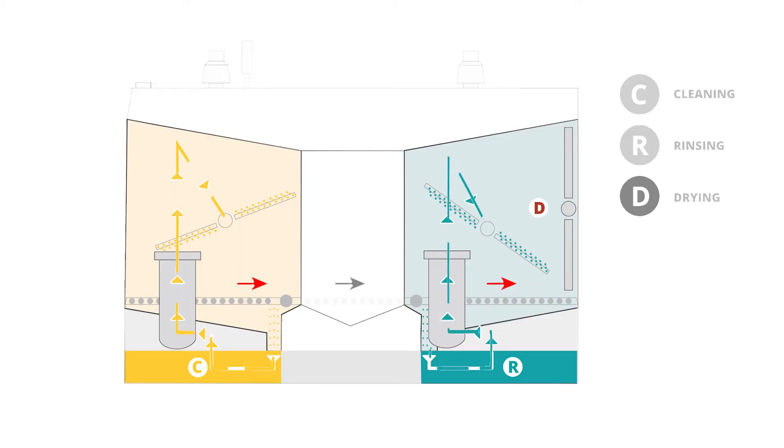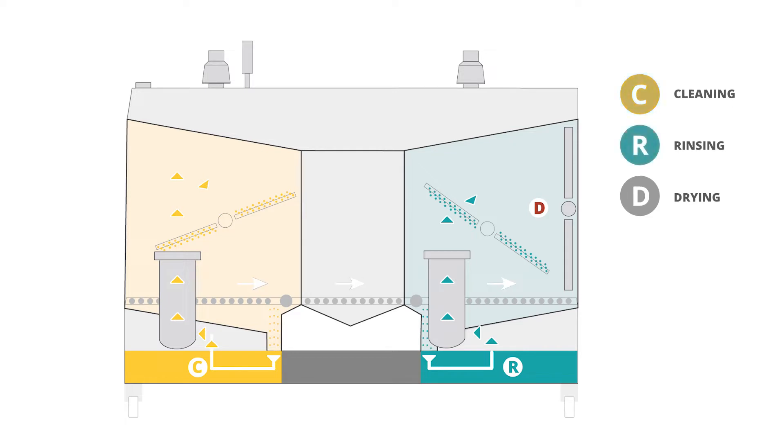The cleaning process is fully automated and takes place in two individual process chambers. Cleaning with chemicals takes place in the first inlet chamber. The second chamber is designed for final rinsing and drying processes.